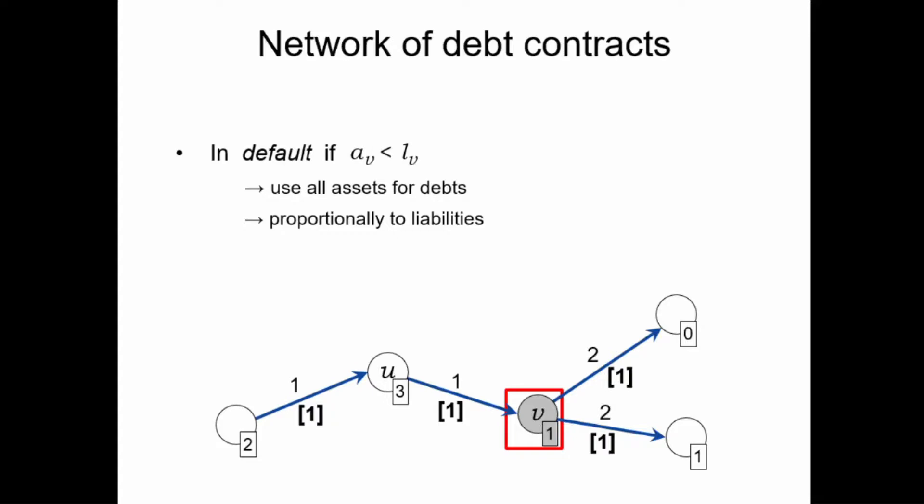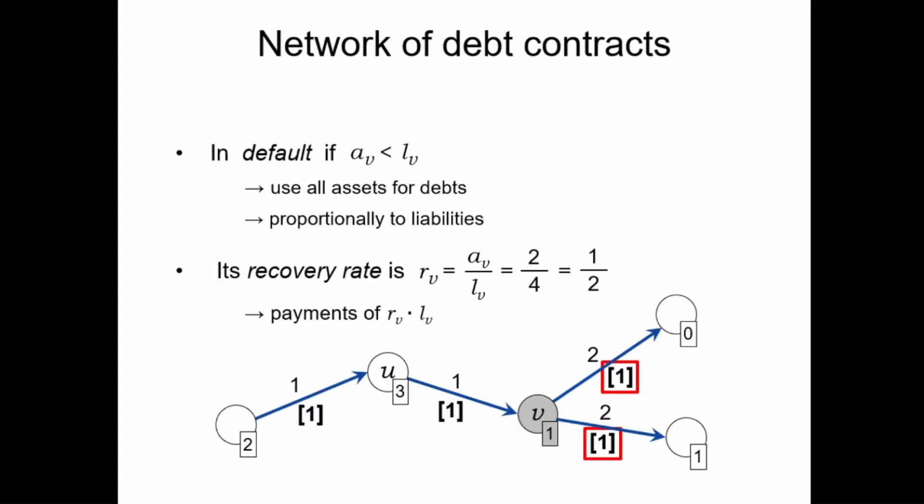Furthermore, we are also interested in the so-called recovery rate of V — that is, the portion of payment obligations that V is able to fulfill, denoted by RV. In this case, this is two over four, or one half. In general, if V is not in default, then its recovery rate is one and it can fulfill all its obligations. If V is in default, then its recovery rate is strictly less than one. Since payments on each edge are proportional to the liabilities, we will always pay an RV portion of the payment obligations on each outgoing debt.